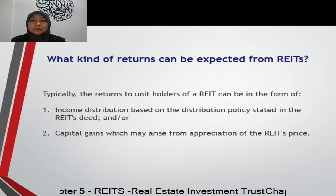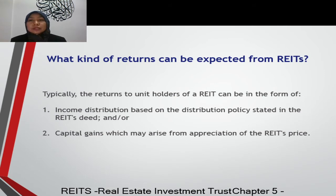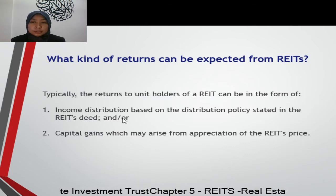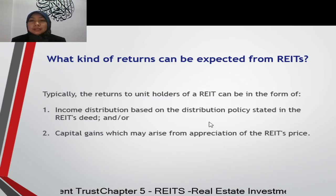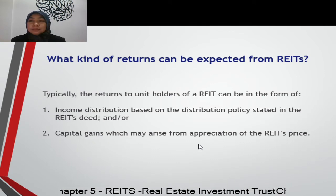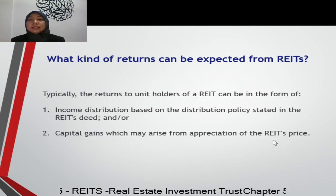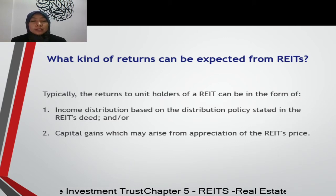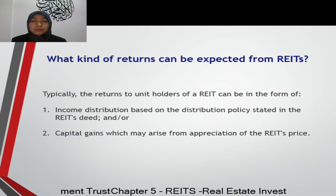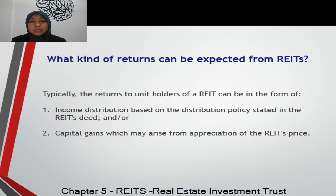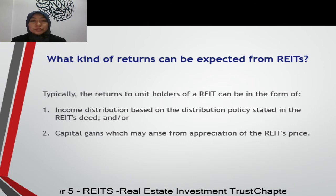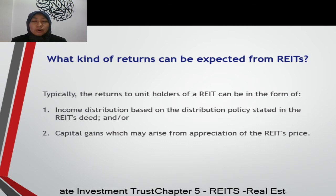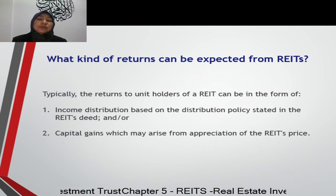What kinds of returns can be expected from REITs? The returns to unit holders of a REIT can be in the form of income distributions based on the distribution policy — rental income — and also capital gain which may arise from appreciation of the REIT price. For example, in 2000 you buy one unit of REITs worth one ringgit, and in 2021 it becomes five ringgit per unit — so you already gain four ringgit per unit of REITs as capital gain, on top of the dividend you receive yearly.